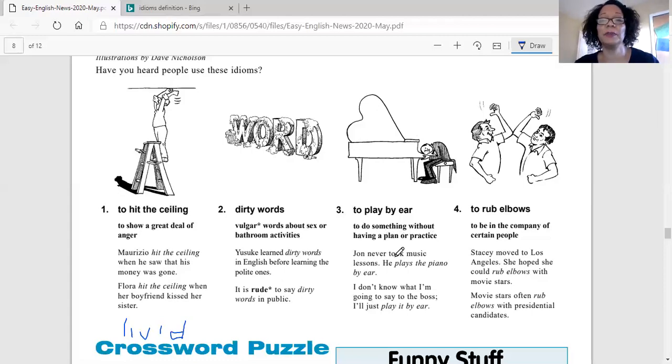John never took music lessons. He plays the piano by ear. Does that mean John plays the piano with his actual ear? No, it means he understands the music. He understands the sounds. He understands where the keys are and which ones to play to make the right music. And he doesn't have to read anything. He can just play it by the way it sounds. He plays the piano by ear.